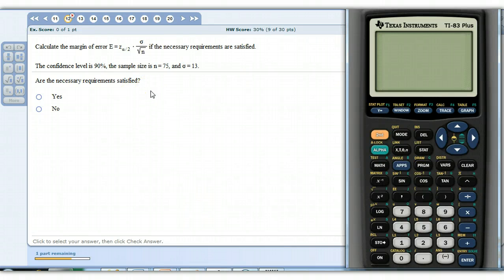This particular question number 12 wants us to calculate the margin of error. Remember this notation stands for the z-score that has the area alpha divided by 2 to the right and left of it in the tails. Basically remember this notation is for the tails of distribution. And then this is the standard deviation of the population, this is your sample size, if the necessary requirements are satisfied.